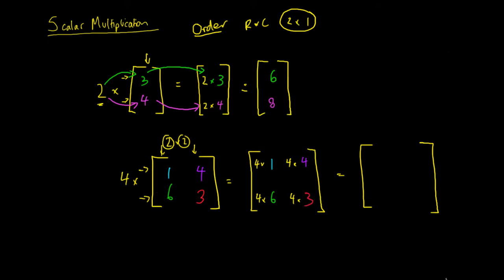So we take our scalar number, multiply it by each term, and put it straight into our matrix. Multiply 4 by 1 and put it into our matrix, multiply 4 by 4 and put it into our matrix, 4 by 6 put it into our matrix, and 4 by 3 put it into our matrix. Then we just complete those multiplications and we end up with the scaled-up matrix. So 4 times 1 is 4, 4 times 4 is 16, 4 times 6 is 24, and 4 times 3 is 12.